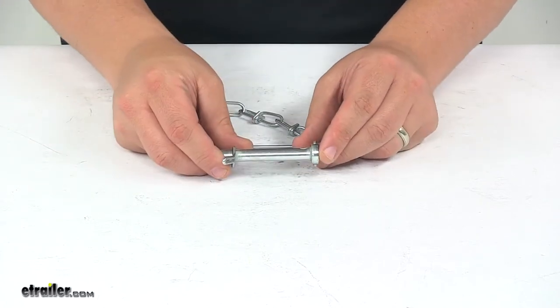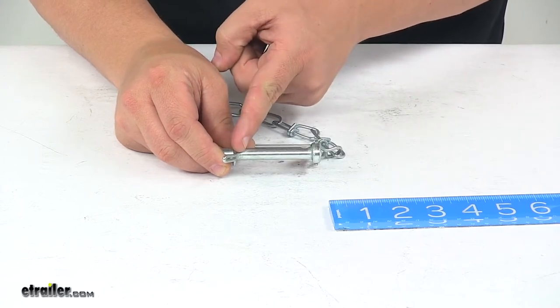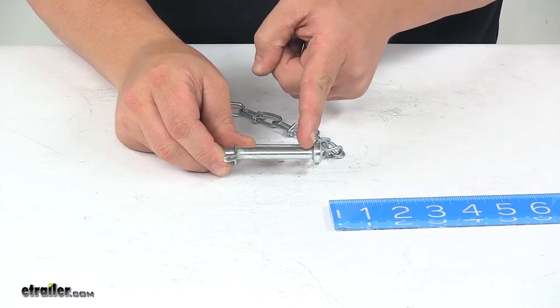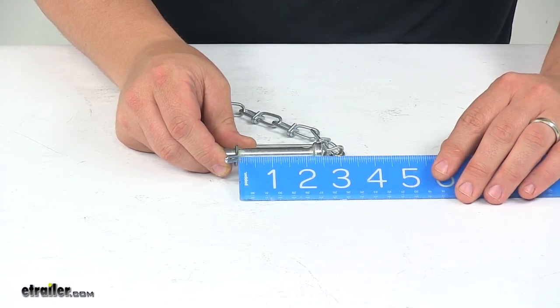A few measurements I want to go over real quick. The usable pin length is taken from the edge of the clip, the inner edge of the clip, to the inside edge of the base right there. And that gives us a usable pin length of 2 1/4 inches.